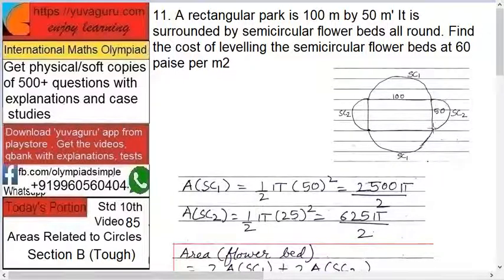Understand the problem: 100 by 50, and semicircular gardens or beds. These are the diameters, 100 and 50. So what we have to find is the cost of leveling all these at 60 paise per square meter.